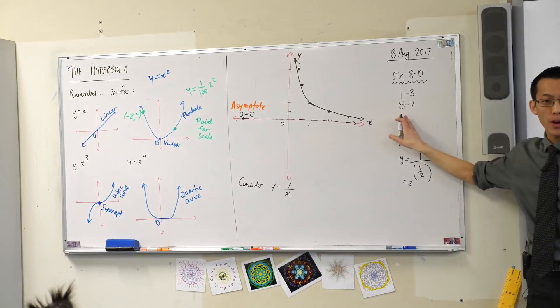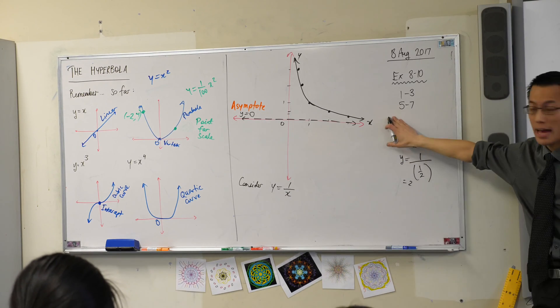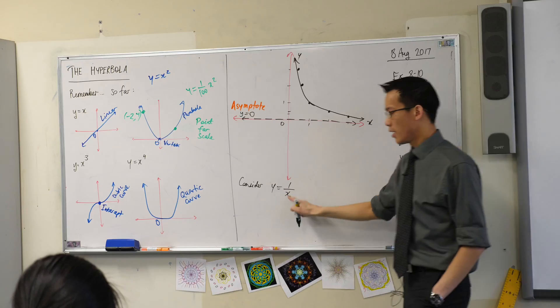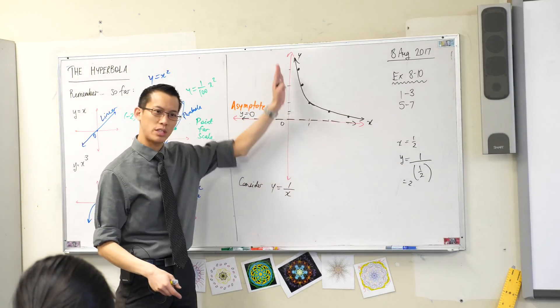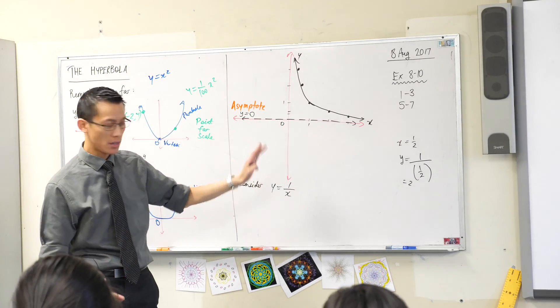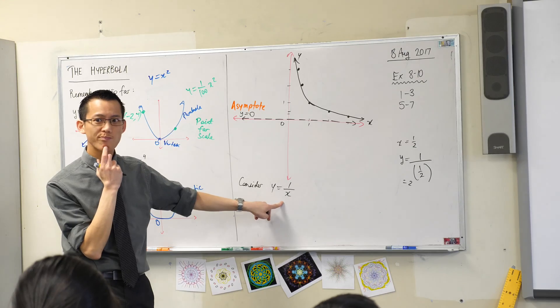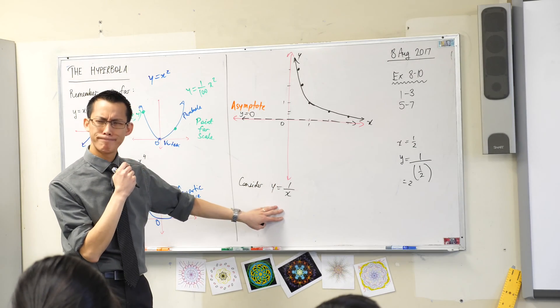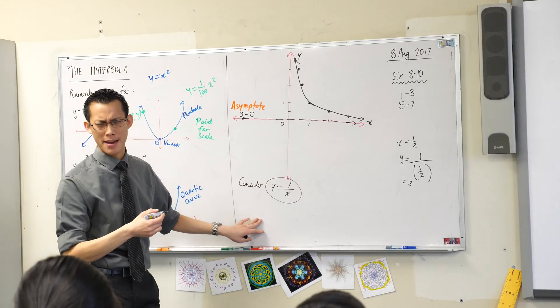Now over here we could play this game of putting in larger and larger numbers of x and seeing what happens. But when you try and go to the left, you run into this problem. Because at x equals zero - that's what you would do to find a y-intercept. What happens when x is equal to zero? Someone's already reached for their calculator. It says math error.